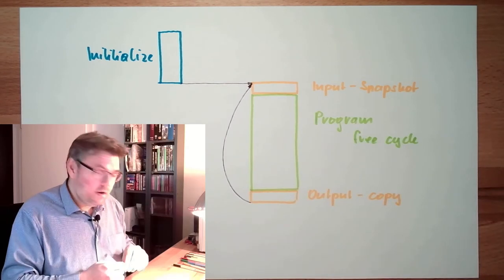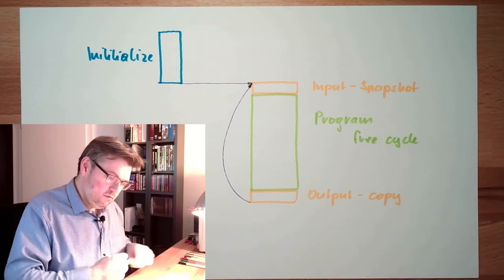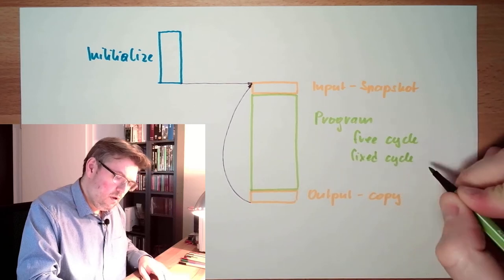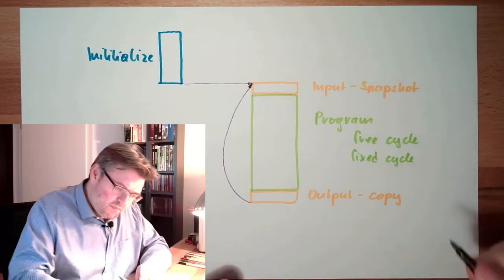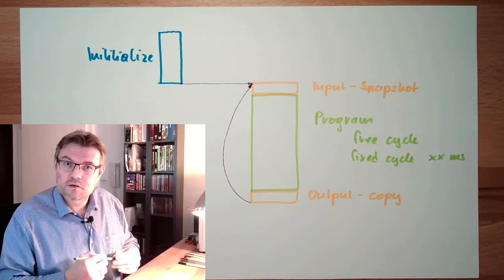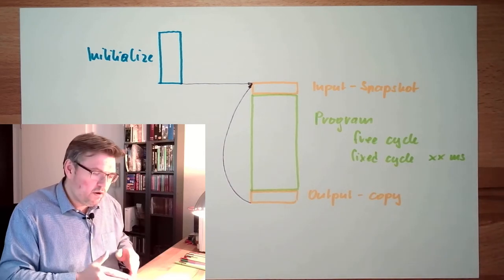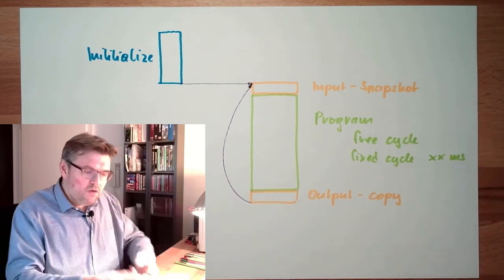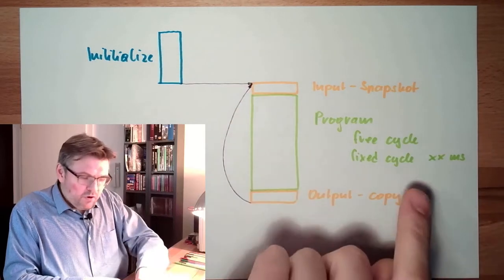However, there are also the possibilities of fixed cycle. In a fixed cycle program, the program will start to be executed after XX milliseconds. I can adjust this usually, or I have to select - there are different fixed cycles. One is starting every 10 milliseconds, one is starting every 20 milliseconds, one is starting every 100 milliseconds and so on. I use a fixed cycle when I'm sure this program is executed every whatever milliseconds.